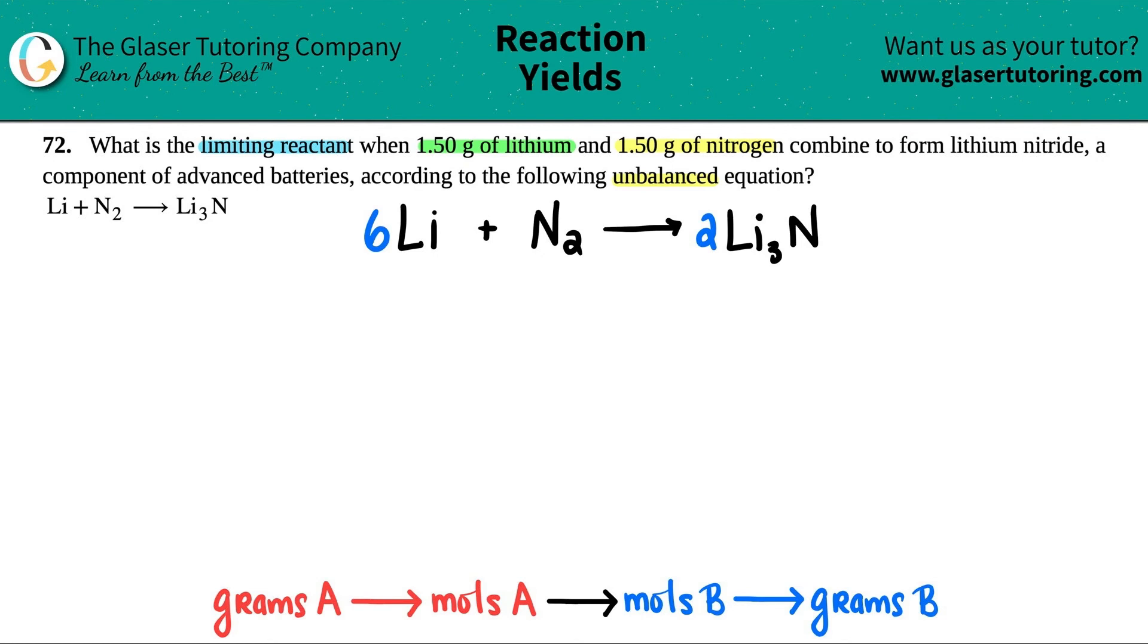The next thing we're going to do is we're going to list out what we have. Now for each one of these, I have 1.5 grams. So I have 1.50 grams of the lithium, and I have 1.50 grams of the nitrogen.